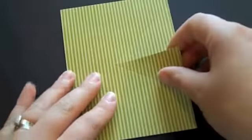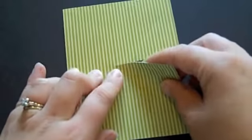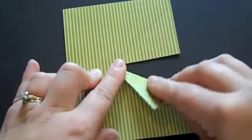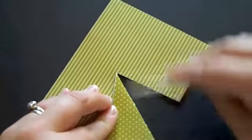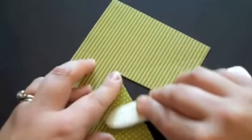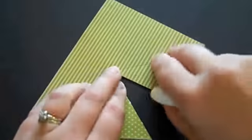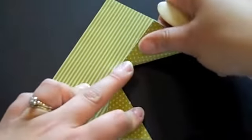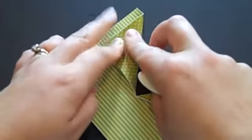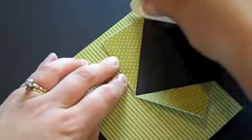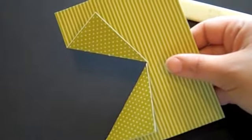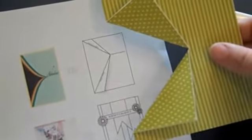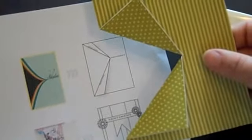After you get that cutting done you can go ahead and fold back on those score lines and it exposes those pretty polka dots. I'm going to use a bone folder to fold those over. And there you have the folded over flaps that are demonstrated in the sketch.